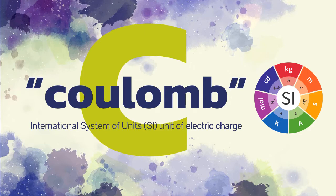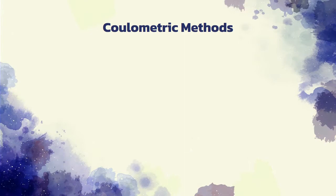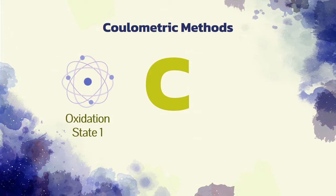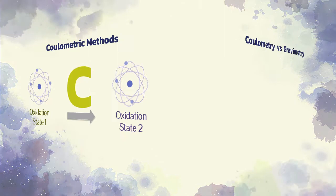The SI unit of electric charge, the coulomb, with the symbol C, was named in his honor in 1880. In coulometric methods, the quantity of electrical charge required to convert a sample of an analyte quantitatively to a different oxidation state is measured.